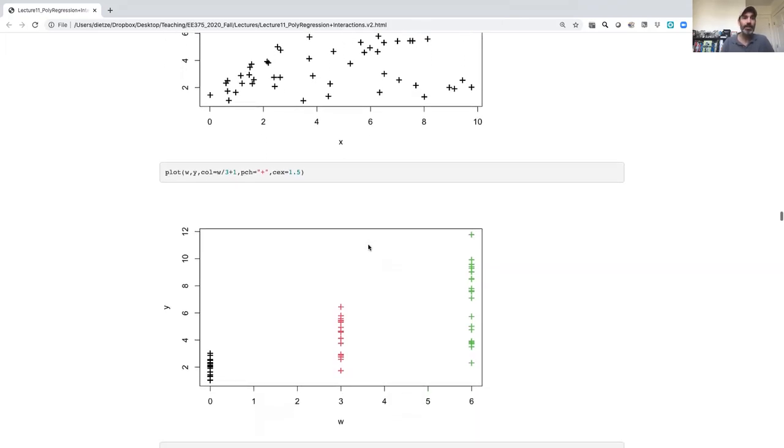Similarly, if I look at the relationship between y and w, which I've again color coded and kept at these three discrete values, I also see a good bit of heteroscedasticity there. So when w is small at 0, there's much less variability, and when w is high at 6, there's much more variability.